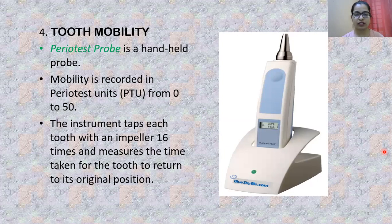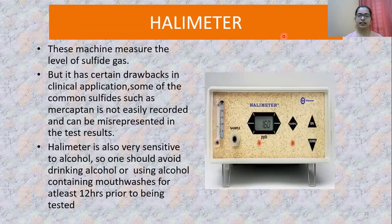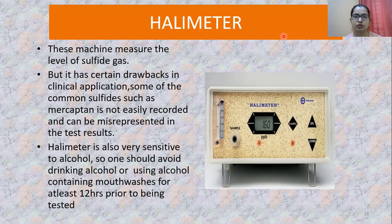Next is tooth mobility — using the Periotest instrument, where a part of the device strikes the tooth surface and records mobility in Periotest units, without manual instrumentation. Next is the Halimeter, a machine that measures the level of sulfide gas to evaluate a patient's halitosis level. Drawbacks include that mercaptan — the most common sulfide gas associated with halitosis — is not easily recorded with this device, and it is very sensitive to alcohol. Patients should not consume alcohol or use alcohol-containing mouthwash for at least 12 hours before the test.